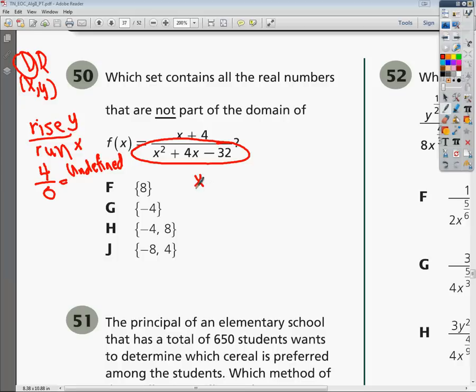I need to set x squared plus 4x minus 32 equal to 0, and I'm looking for solutions to this set. There's a couple ways you can do it once you get there. But if you remember that exceptions in the domain or parts that are not part of the domain would be situations that would make the denominator 0.